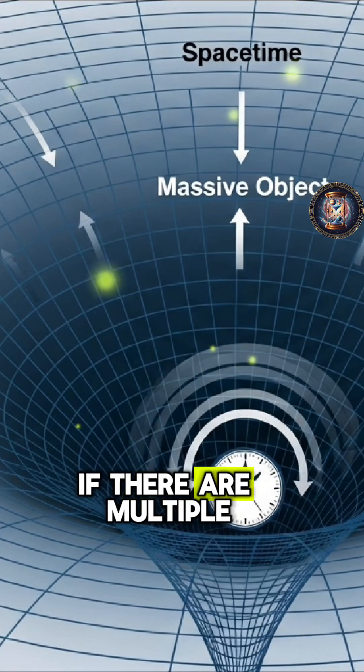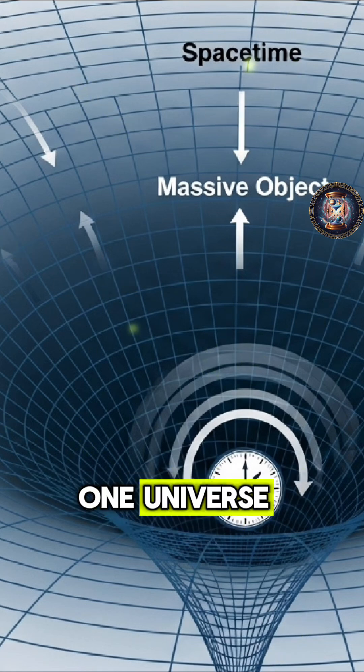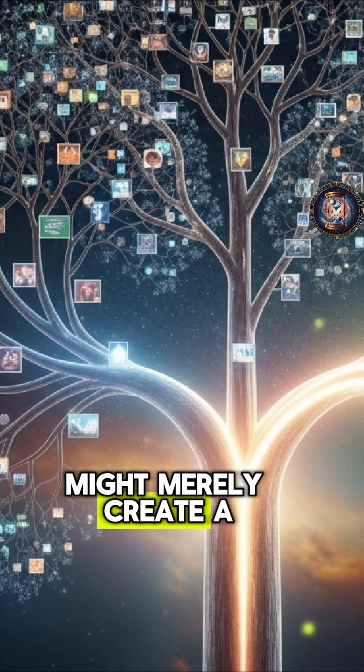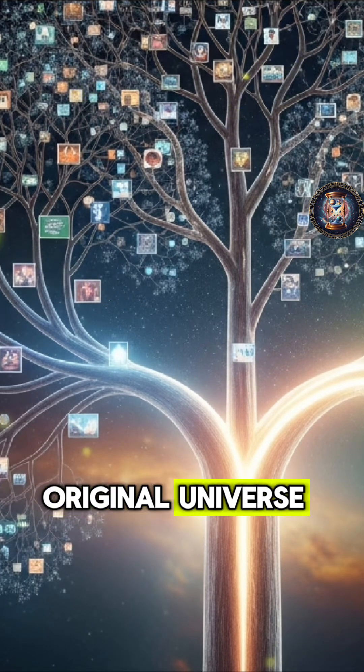If there are multiple parallel universes, changing the past in one universe might merely create a new branch universe, without affecting the traveler's original universe.